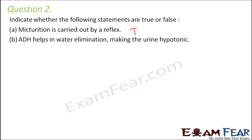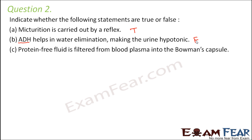Second statement — ADH helps in water elimination making the urine hypotonic. ADH is antidiuretic hormone. When water is removed from urine, the urine becomes more concentrated, that is hypertonic — not hypotonic. So this is false. Third statement — protein-free fluid is filtered from blood plasma into the Bowman's capsule. Most of the plasma except large proteins enters the Bowman's capsule, so this is true.